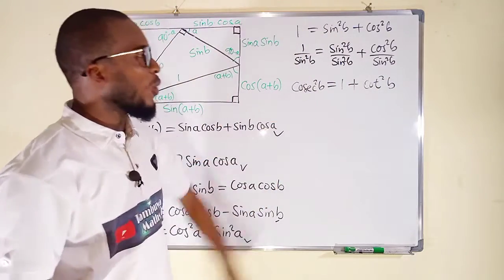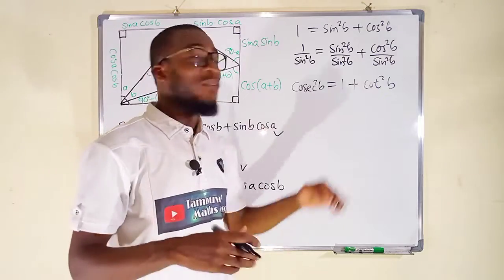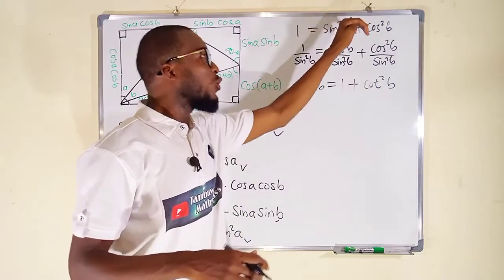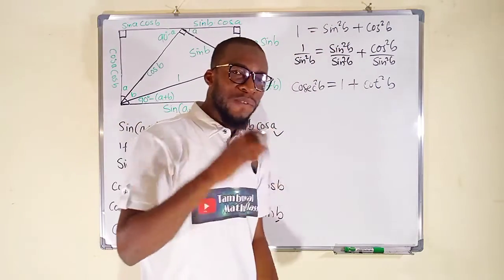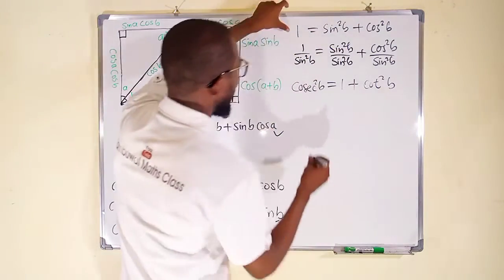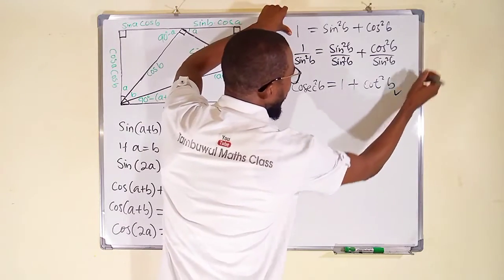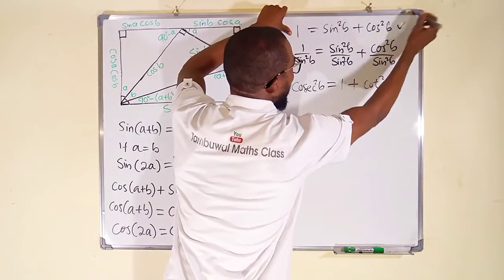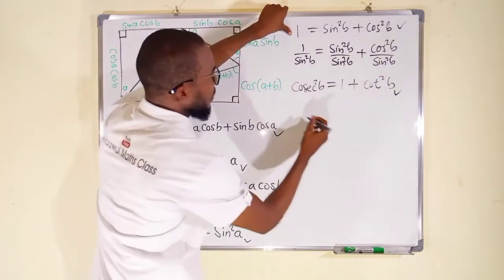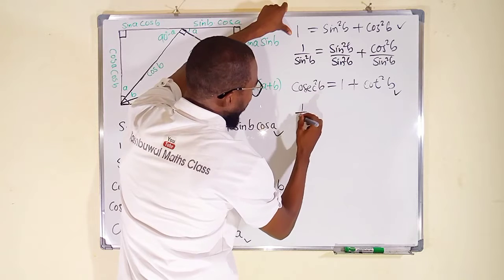Deriving from the initial identity, if we divide each term by cos²B we can obtain another identity. One divided by cos²B equals sin²B divided by cos²B plus cos²B divided by cos²B, which gives us sec²B = tan²B + 1.